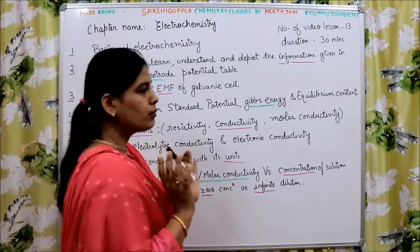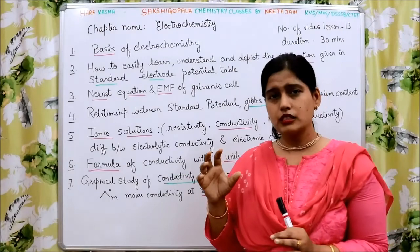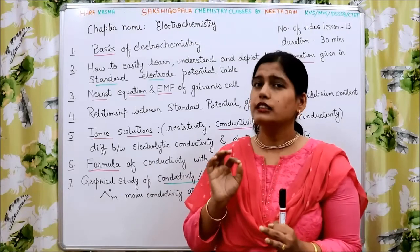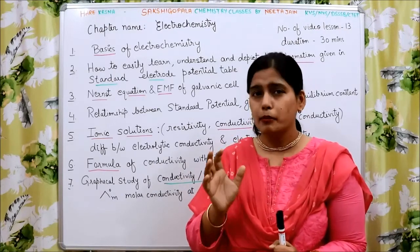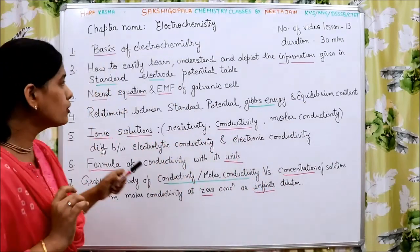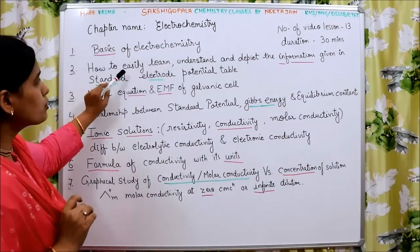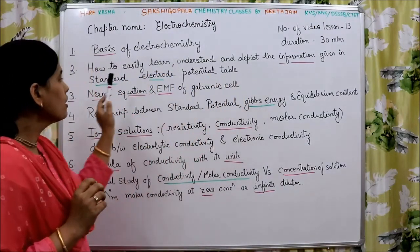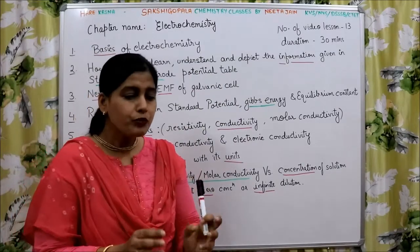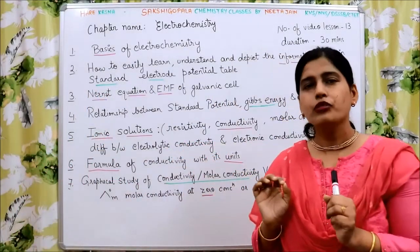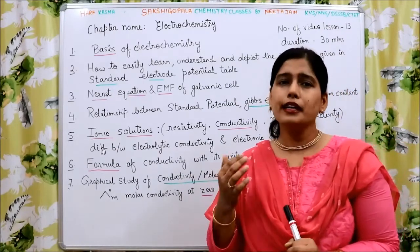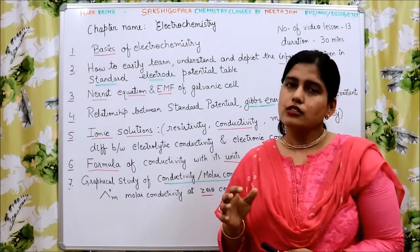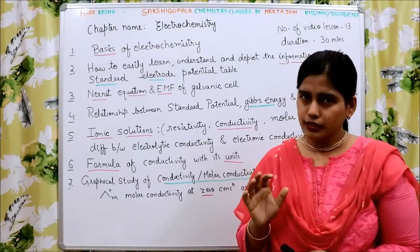The basics of electrochemistry, upon which the entire subject of electrochemistry depends — like the Daniel cell and redox concepts. Coming to the second video module, that is how to easily learn, understand and interpret the information given in the standard electrode potential table — how it can be easily understood and what various information it contains.